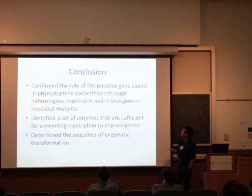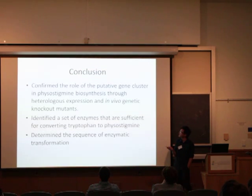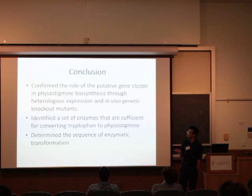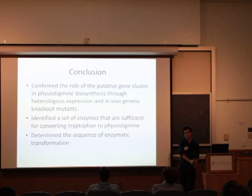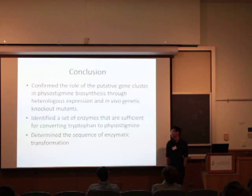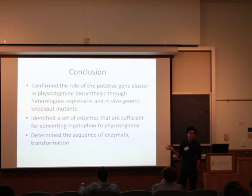In conclusion, we were able to confirm the roles of the putative gene cluster in physostigmine biosynthesis using in vivo genetic mutant knockouts and heterologous expression. We also identified a minimal set of enzymes that can convert 5-hydroxytryptophan to physostigmine, and we determined the sequence of the enzymatic transformations.